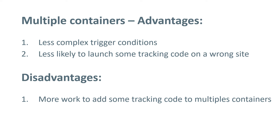But personally, I would still rather have separate containers for each website. For example, if you have 50 websites with a bunch of different trigger conditions and tags firing on different websites, you'll very quickly hit the 200-kilobyte size limit per Google Tag Manager container. If you have 10 or 20 websites each with a separate container, you can handle this manually — copying tags, triggers, and variables, or exporting and importing files into a new container.